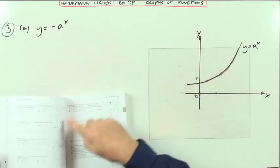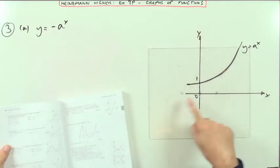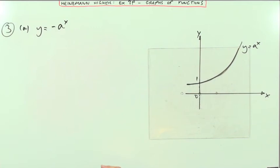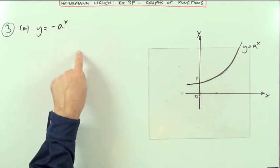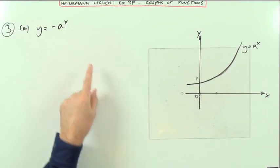Higher Graphs of Functions, Exercise 3P, number 3. Here's an exponential graph. So the first part says draw the graph of negative A of X.